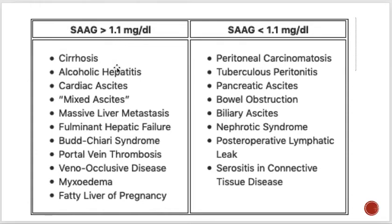When SAAG is greater than 1.1 g/dL, causes include cirrhosis, alcoholic hepatitis, cardiac failure, and liver failure — all transudate causes. When SAAG is less than 1.1 g/dL, it is mostly an exudate, pointing toward inflammation, obstruction, biliary ascites, nephrotic syndrome, and similar conditions.